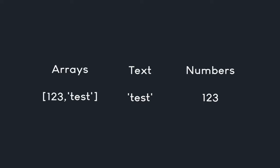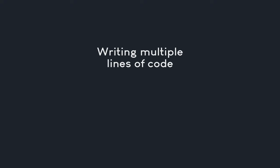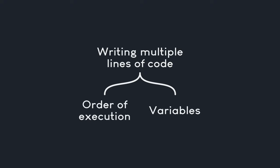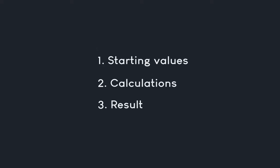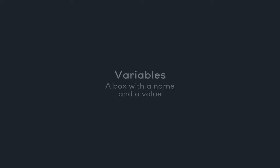To write multiple lines, we need two concepts: the order of execution and variables. The order of execution means After Effects reads code starting at the top and working downward — first line executes first, then the second, then the third. To connect individual lines you need variables. A variable is basically a box with a name that can contain a value, which you can reference across multiple lines.